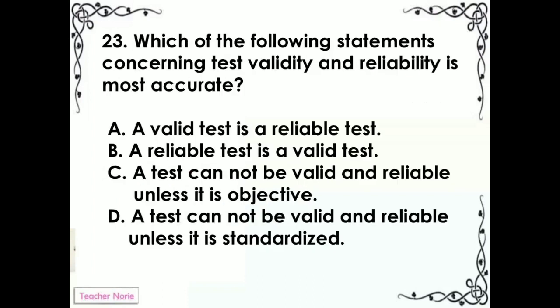Which of the following statements concerning test validity and reliability is most accurate? A. A valid test is a reliable test. B. A reliable test is a valid test. C. A test cannot be valid and reliable unless it is objective. D. A test cannot be valid and reliable unless it is standardized.